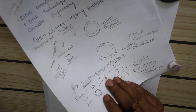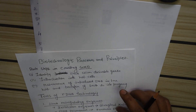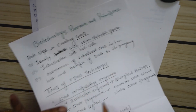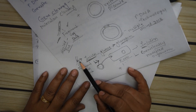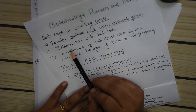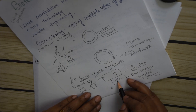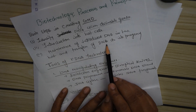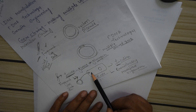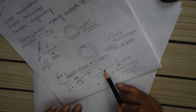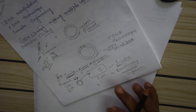For making any organism genetically modified, we need the following steps. First, we have to identify the DNA with the desirable gene — for example, this fragment has a gene which encodes for insulin. Next is introduction of the gene into the host; here it has been introduced into E. coli. The third point is maintenance of the introduced DNA in the host and transfer of the DNA to progeny. Whatever has been introduced into the host cell should be maintained, and when the E. coli multiplies, the genome should be transferred to the progeny.